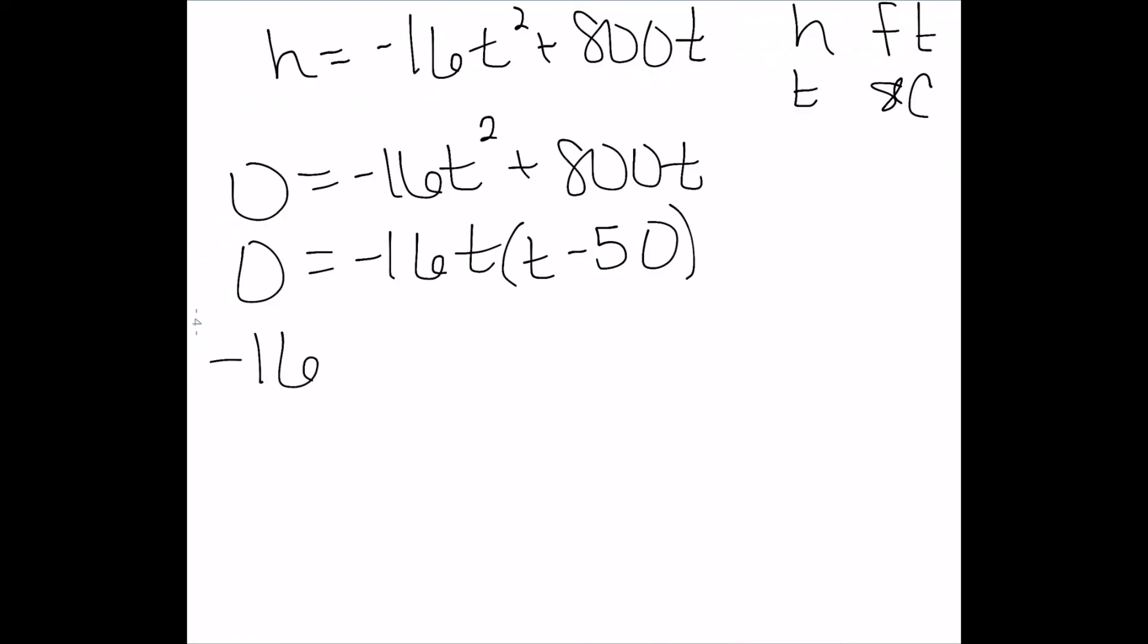So either negative 16t is zero, or t minus 50 is equal to zero. The first one is time zero when it's shot. The second one would be 50 seconds later is when it reaches the ground.